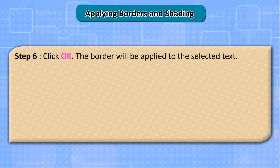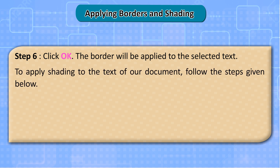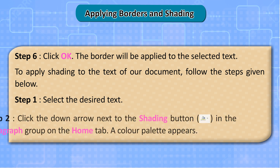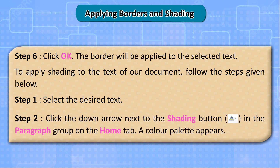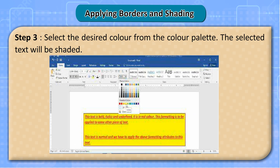The border will be applied to the selected text. To apply shading to the text of our document, follow the steps given below. Step 1: Select the desired text. Step 2: Click the down arrow next to the Shading button in the Paragraph group on the Home tab. A color palette appears. Step 3: Select the desired color from the color palette. The selected text will be shaded.